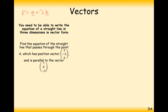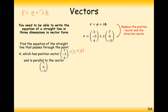Find the equation of the straight line that passes through point A with position vector (3, -5, 4) and is parallel to the vector (7, 0, -3). The general equation is r equals a plus lambda b, so we replace the starting coordinate with (3, -5, 4) and the direction vector b with (7, 0, -3). That's effectively the equation of the line — it's as straightforward as that.